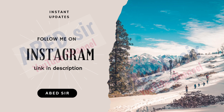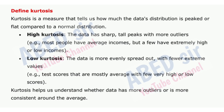Next important short question: Define kurtosis. Kurtosis is a measure that tells us how much the data's distribution is peaked or flat compared to a normal distribution. High kurtosis: the data has sharp, tall peaks with more outliers — for example, most people have average incomes but a few have extremely high or low incomes. Low kurtosis: the data is more evenly spread out with fewer extreme values — for example, test scores that are mostly average with few very high or low scores. Kurtosis helps us understand whether data has more outliers or is more consistent around the average.